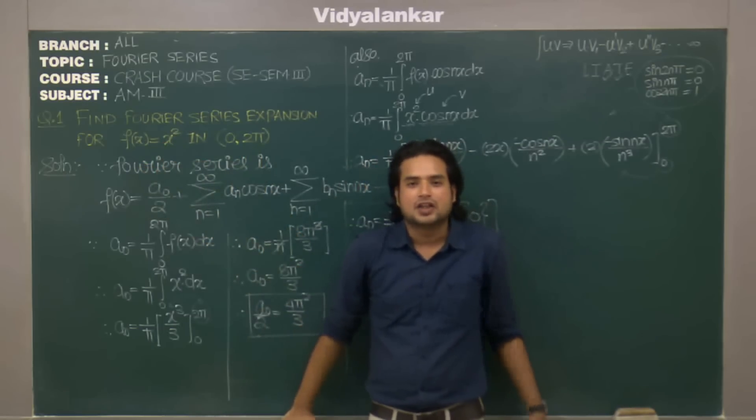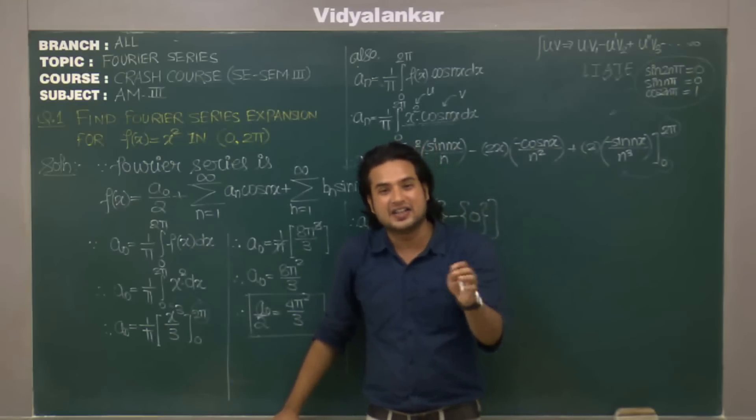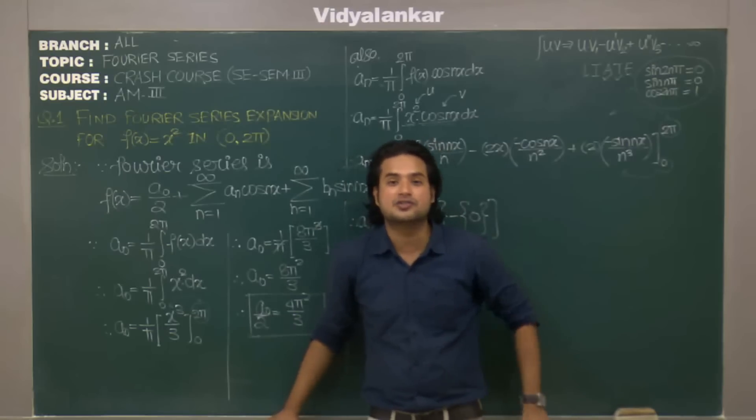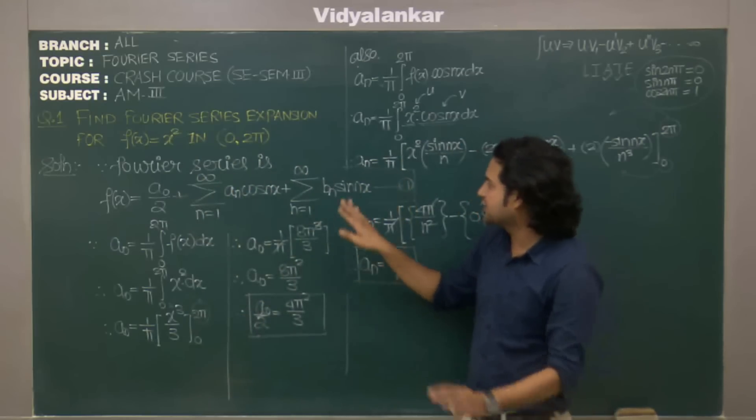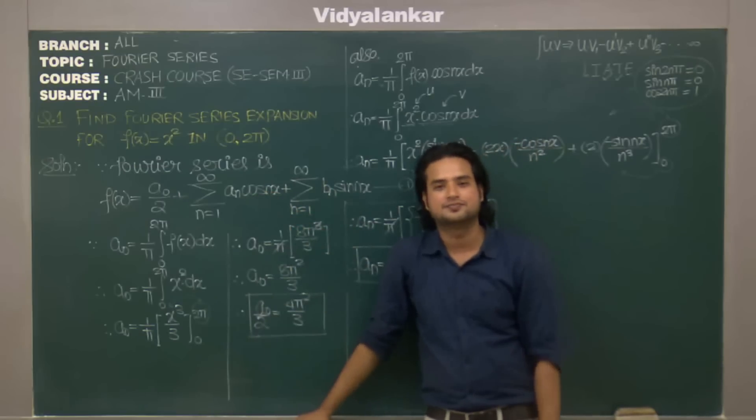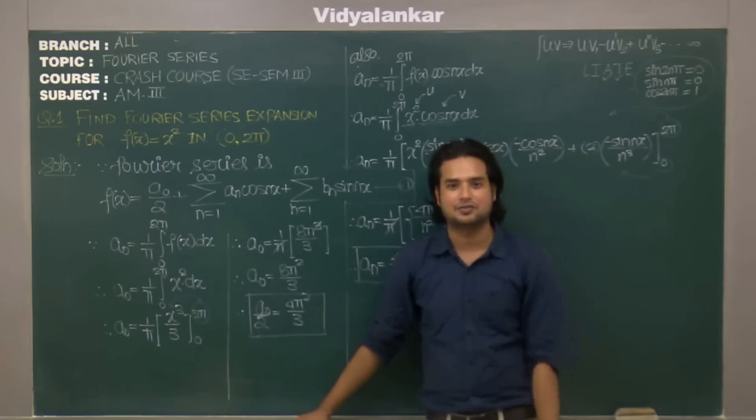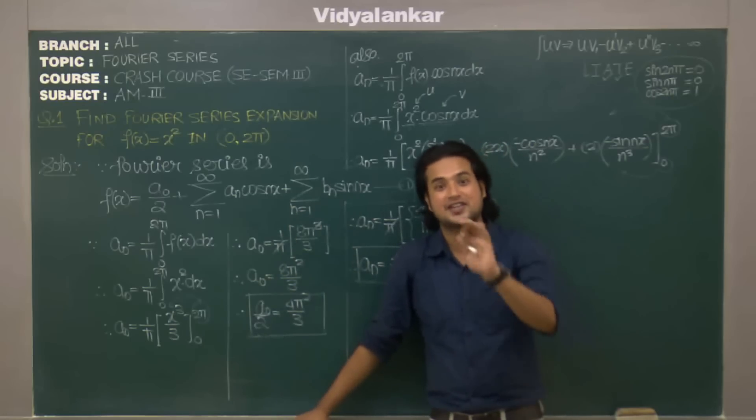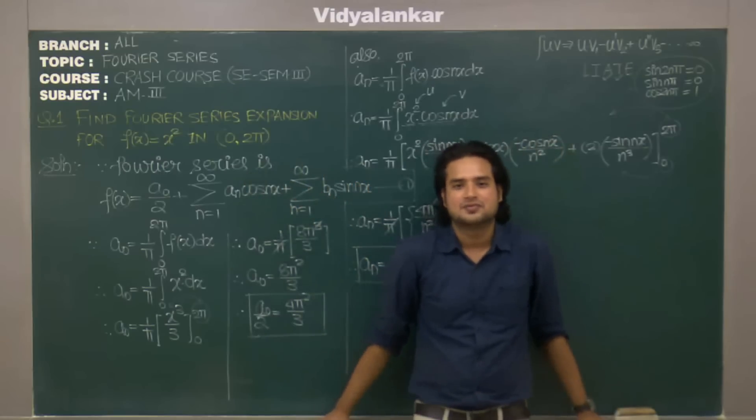Then there is what we call as half range series. Now if I say half range, what is it? If this is Fourier full range, half range refers to either cosine series or sine series. So this is what we covered in this demonstration.